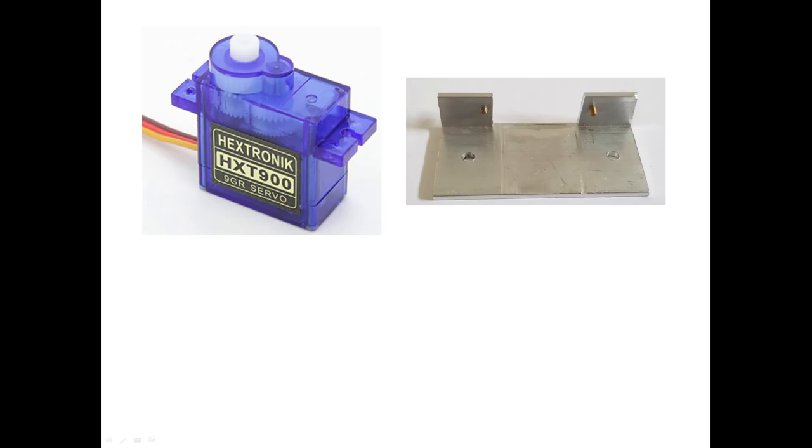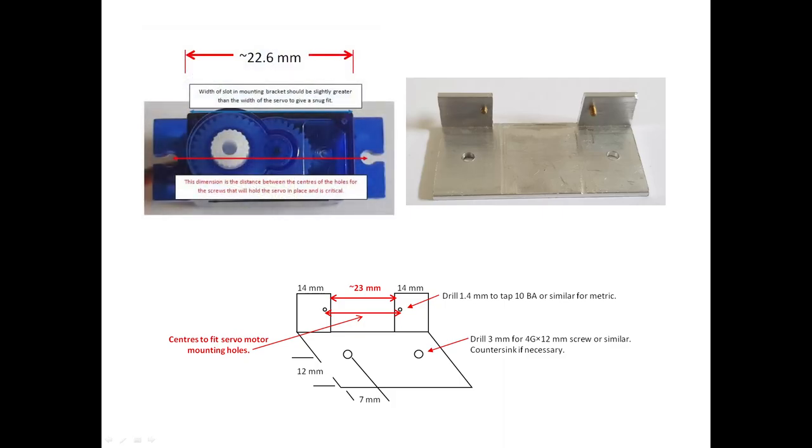The dimensions of the bracket will depend upon the size of the servo motor being used, in particular its width and the distance between the centres of the mounting holes. This means that for the bracket the critical dimensions are the width of the slot in the bracket, which should be such as to give a snug fit when the servo motor is inserted, and the distance between the holes that you drill to mount the servo. These are shown here in red. For other servo motors they'll probably be different from those shown here. The other dimensions of the bracket can be changed to suit.